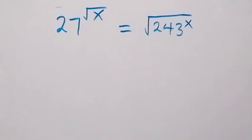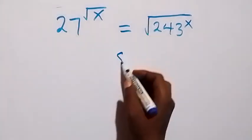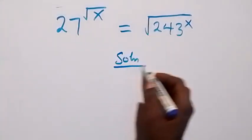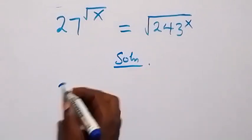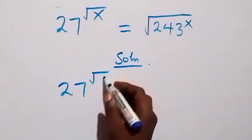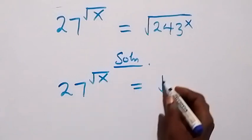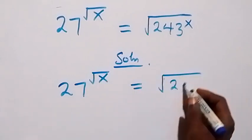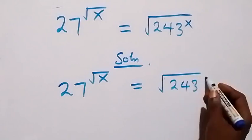Hello, you are welcome. How to solve this nice math problem involving square roots? What is given is: 27 raised to power root x equals to square root of 243 raised to power x.